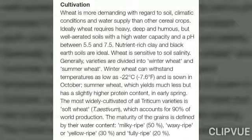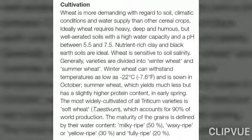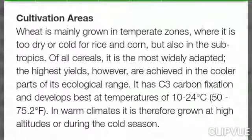Wheat is more demanding with regard to soil, climatic conditions, and water supply than other cereal crops. Ideally wheat requires heavy, deep, and humus-rich, well-irrigated soil with high water capacity and a pH between 5.5 and 7.5. Nutrient-rich black earth soil is good for the crop.